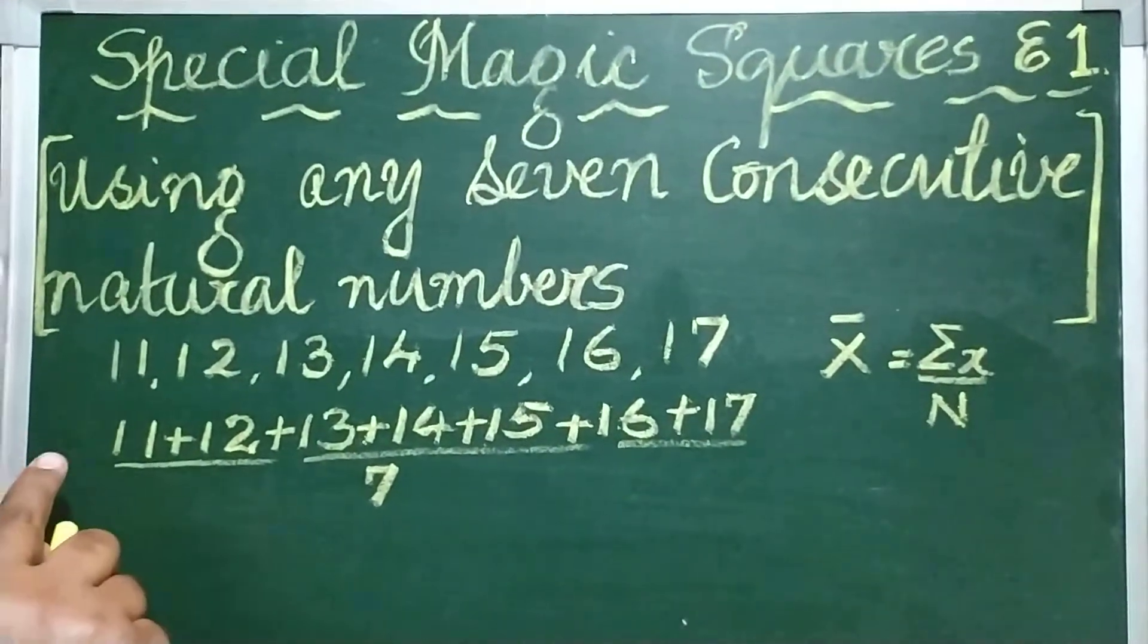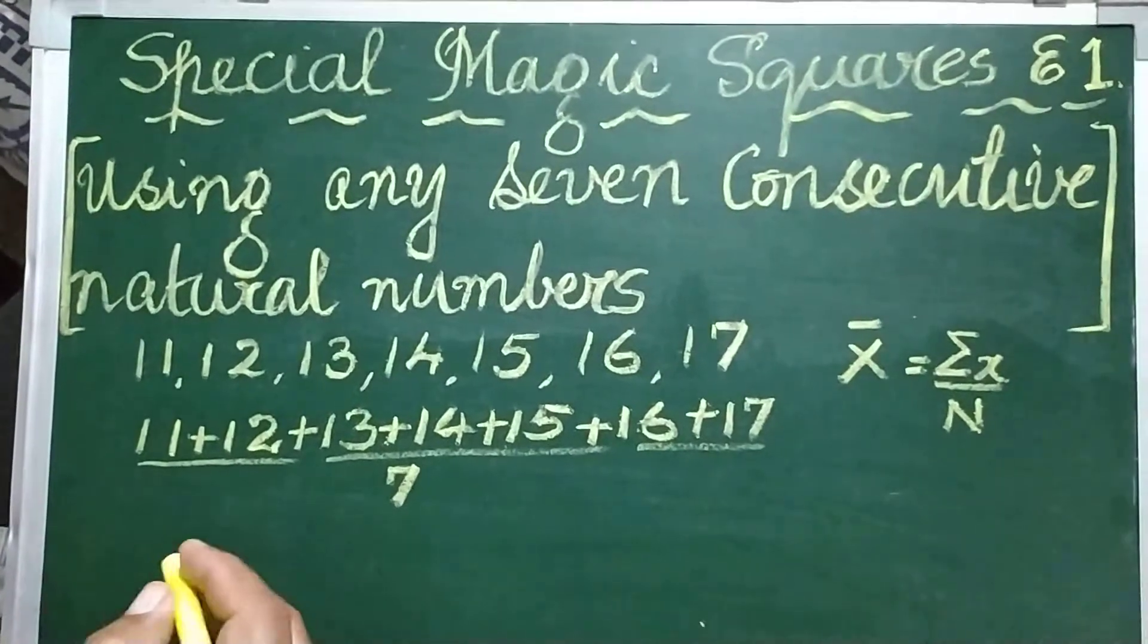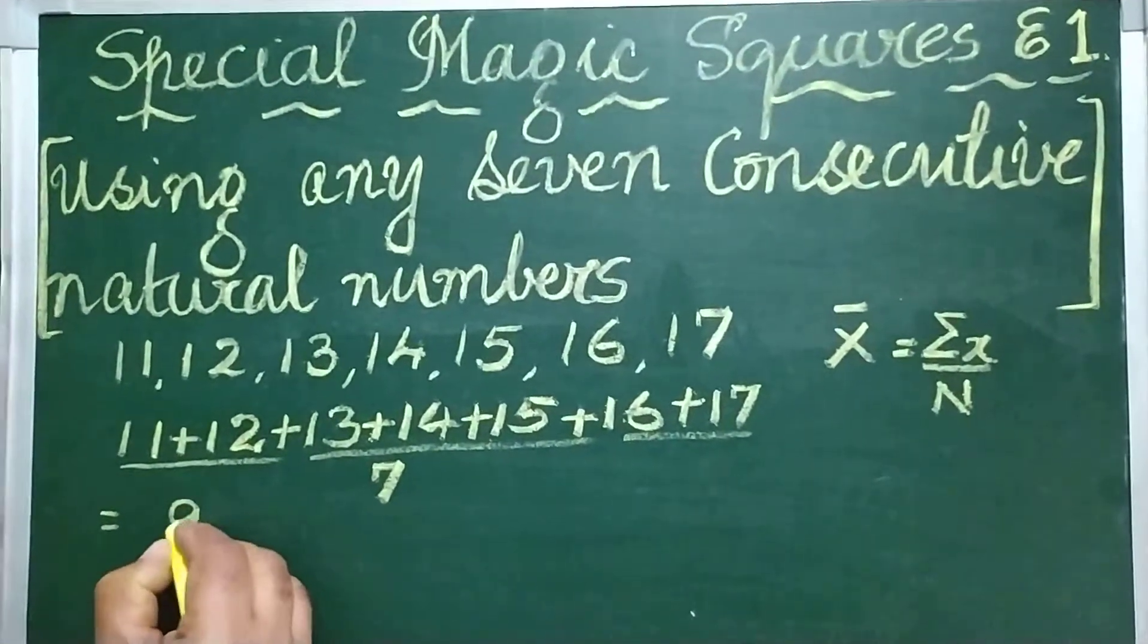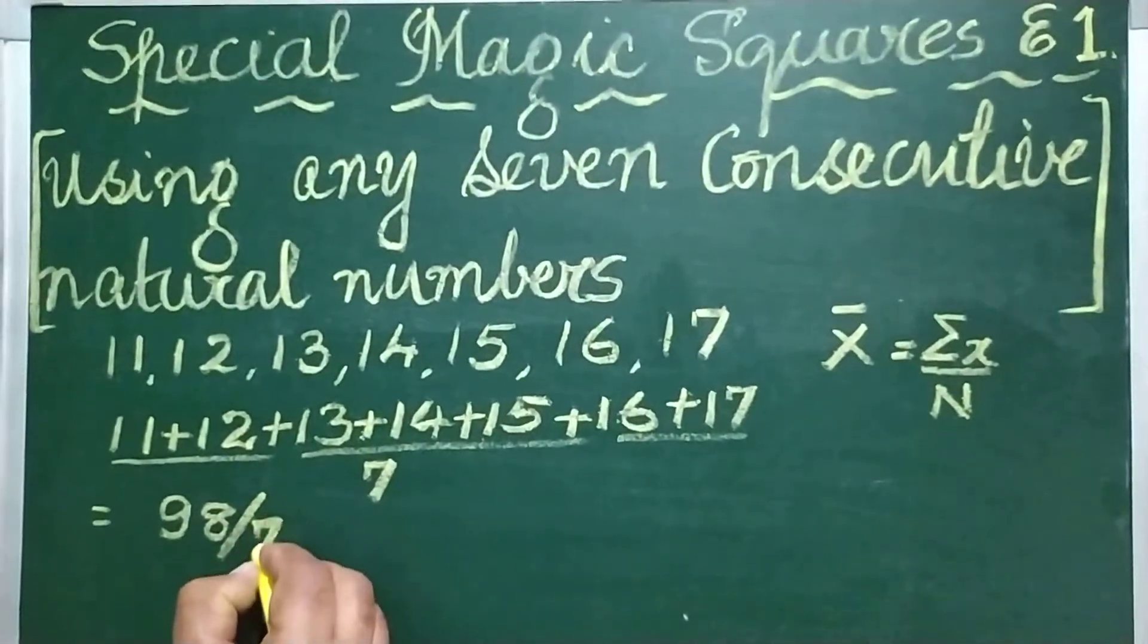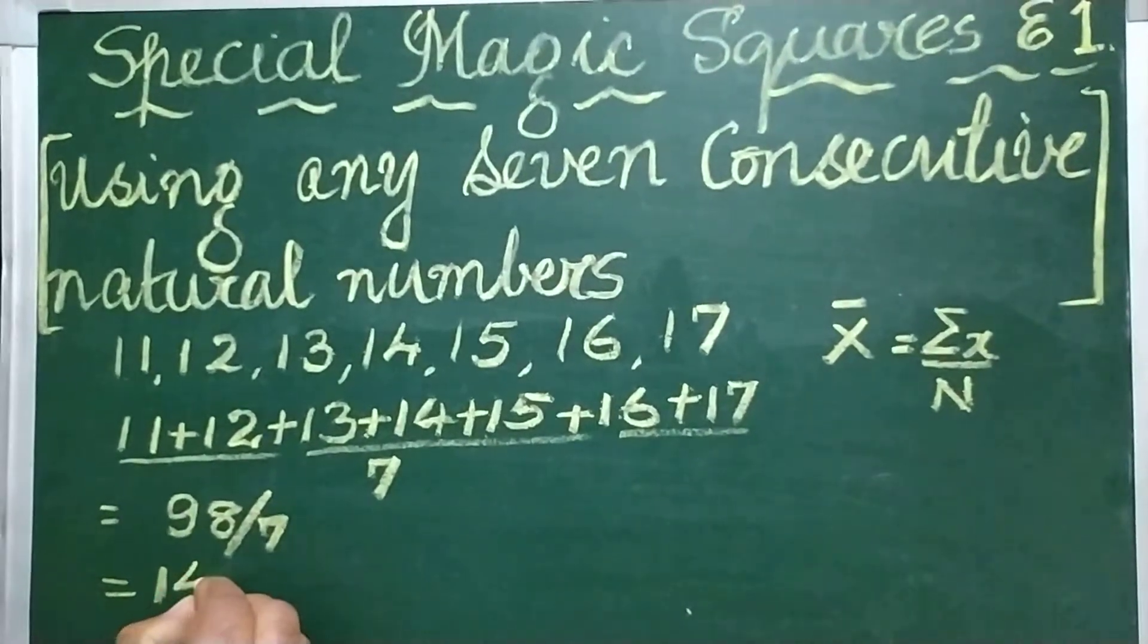Now, if I find the sum of the natural numbers that I have chosen, that will be equal to 98. And when I divide it by 7, I will get the answer as 14.